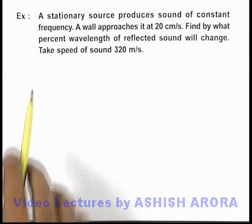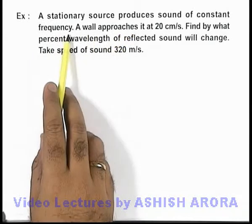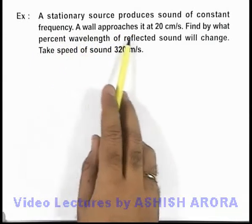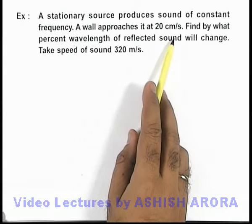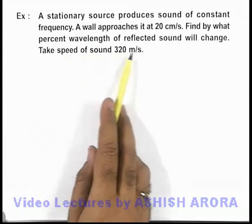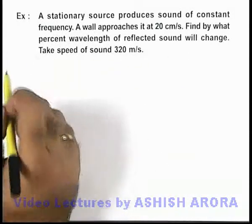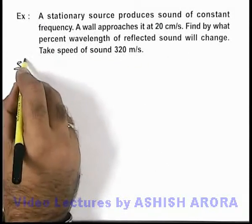In this example, we are given that a stationary source produces sound of constant frequency. A wall approaches it at 20 meters per second. We are required to find by what percent the wavelength of reflected sound will change. We can take the speed of sound to be 320 meters per second.